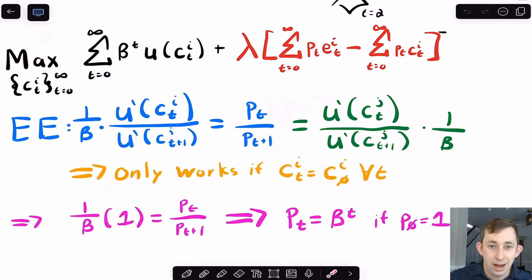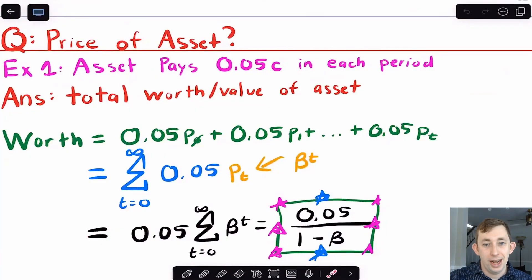The reason we're reviewing this is because we're talking about asset pricing. If I want to know how to price an asset, I need to know what the prices are in this Arrow-Debreu world. Let's just talk about the price of a general asset. The price of a general asset should just be what it's worth to you.